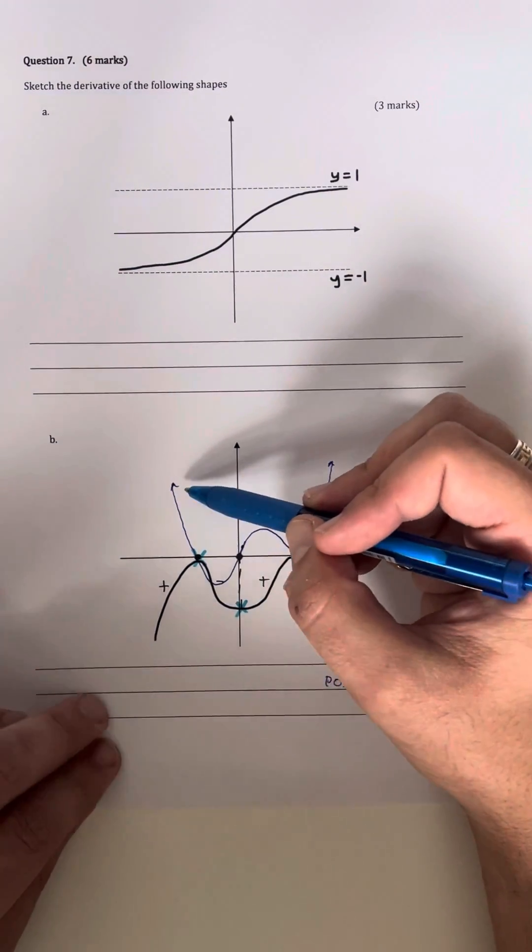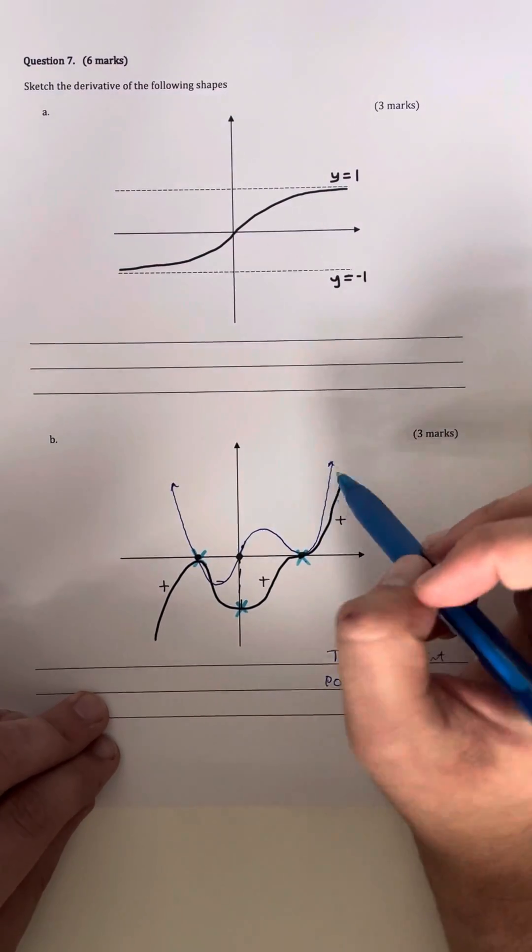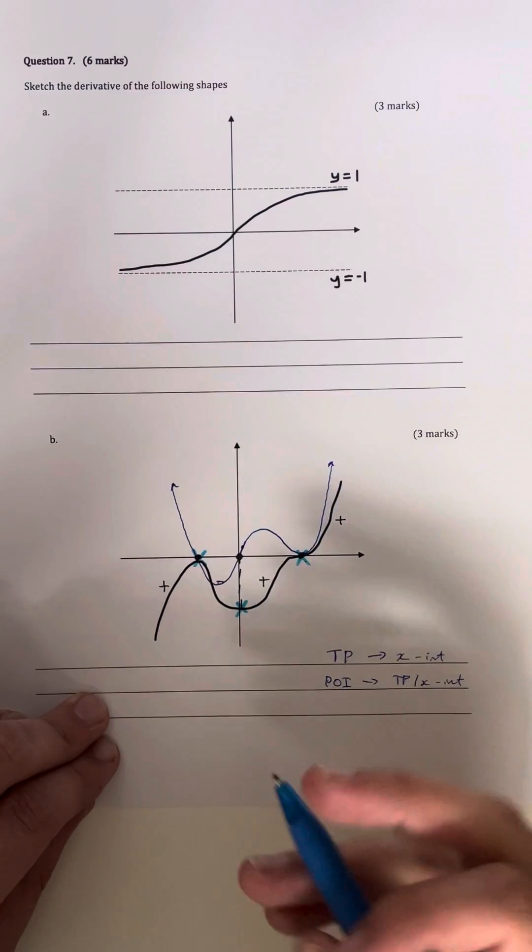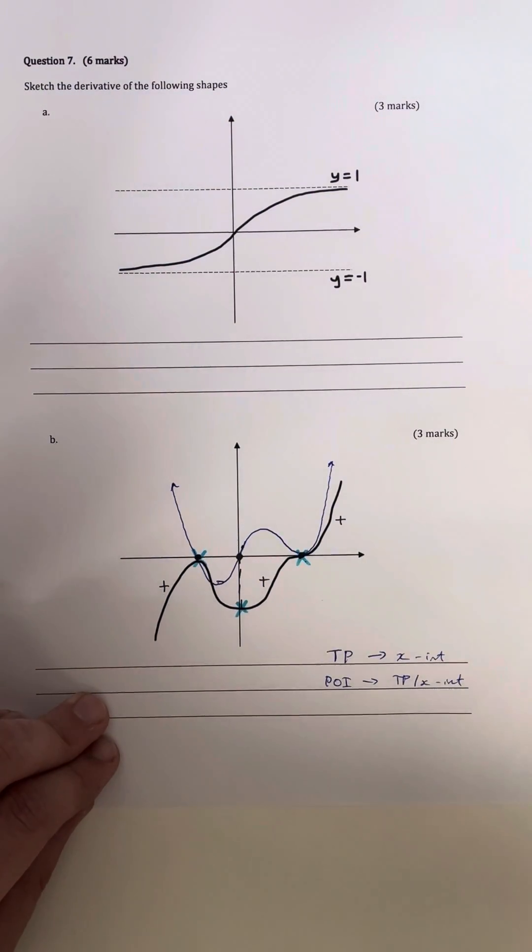Now you can see my derivative looks roughly like a fourth degree polynomial, because I have three turning points or three stationary points. And that makes sense because the fifth degree polynomial became a fourth degree polynomial after differentiating using the power rule. So that's my double check to make sure that I've done this right.